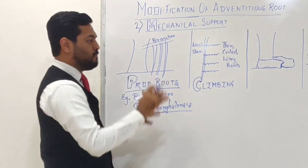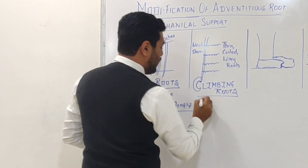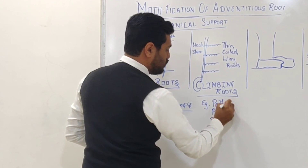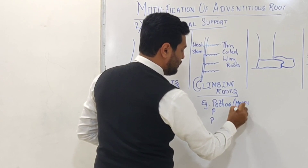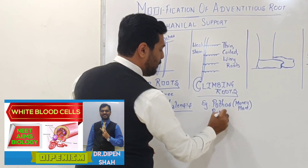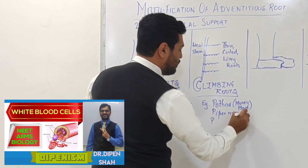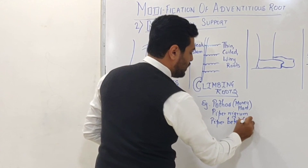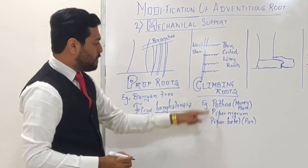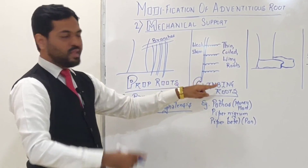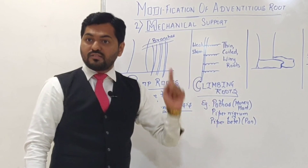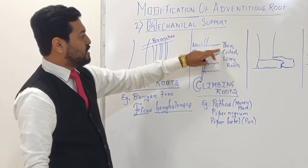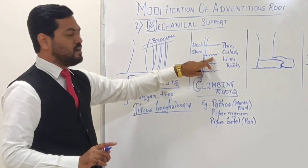Climbing roots are seen in three examples: first is Pothos, which means money plant; second is Piper nigrum, which is black pepper or kali mirch; and third is Piper betle, also called paan. All these plants show climbing roots. A similar thin, coiled, wiry structure can appear in stems too, but when it appears in a stem it is called a tendril, and in a leaf it's called a leaf tendril — the appearance is the same.